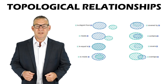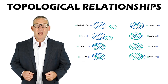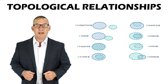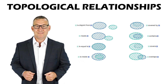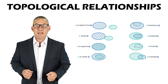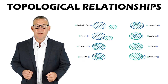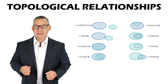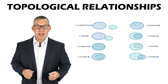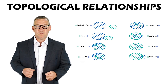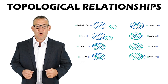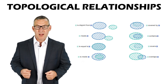Topological relationships are spatial relationships that characterize the relative position of spatial objects. Topological relationships include: Equals, Disjoint, Intersects, Touches, Contains, Covers, Covered By, Within, Crosses, and Overlaps.